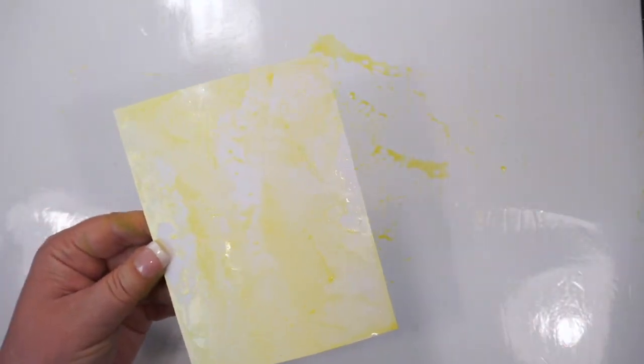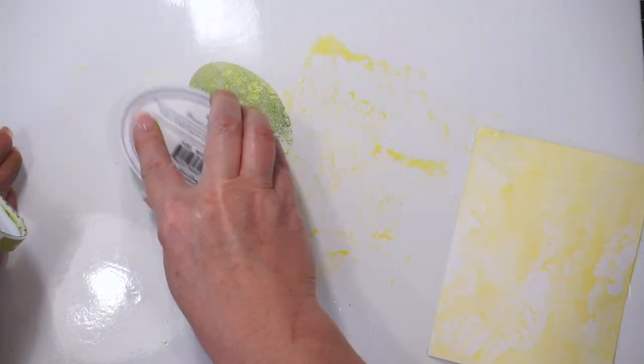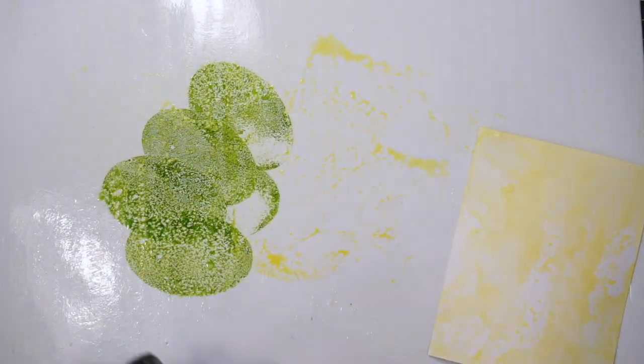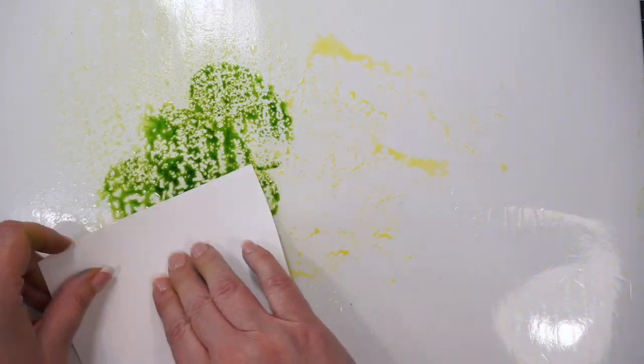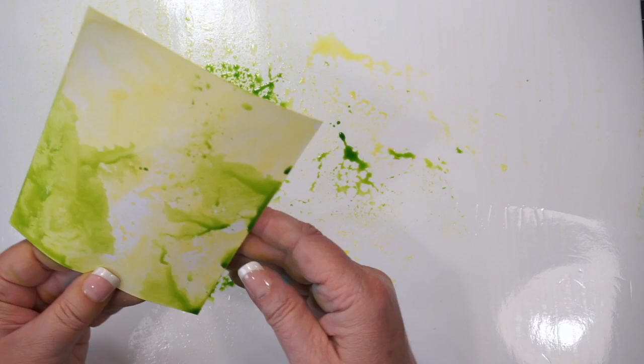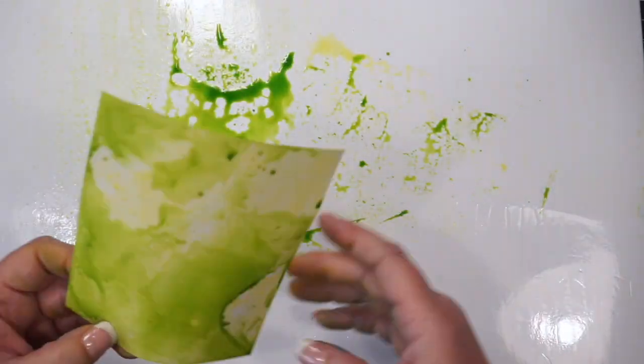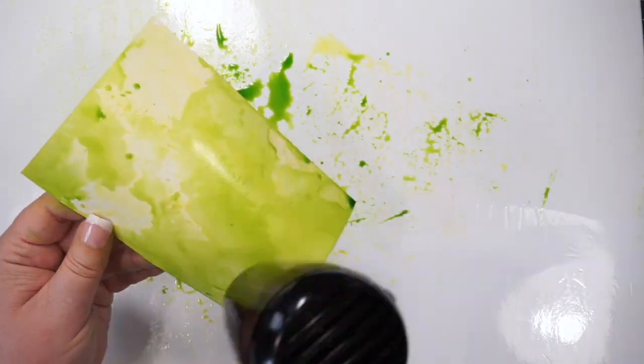I begin by smooshing a light yellow water-based dye ink onto a non-porous mat, spritz with water, and then gently dab a small sheet of inexpensive watercolor paper around in the ink. I dry between layers using a heat gun.